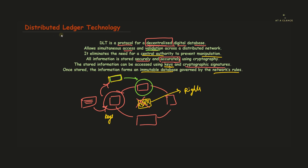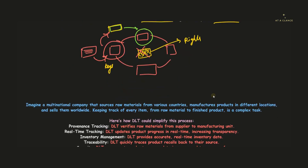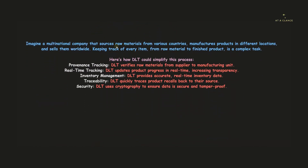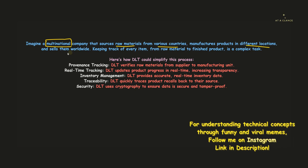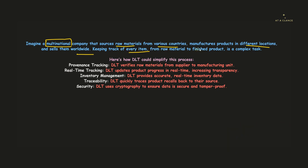Now that the basic idea of distributed ledger technology is clear, let's look at a simple example to resolve any remaining doubts. Imagine a multinational company that sources raw materials from various countries, manufactures products in different locations, and sells them worldwide. Keeping track of every single item from raw material to finished product is a very complex and tedious task — and this is where DLT can simplify the entire process.